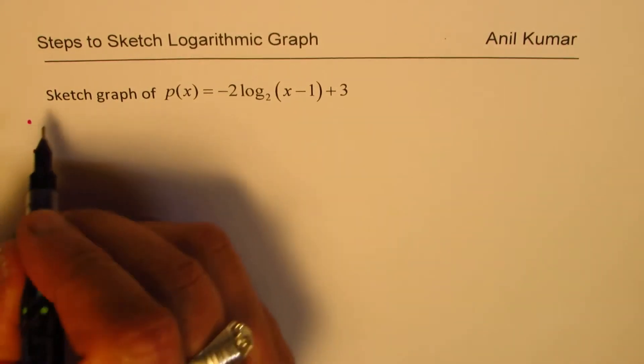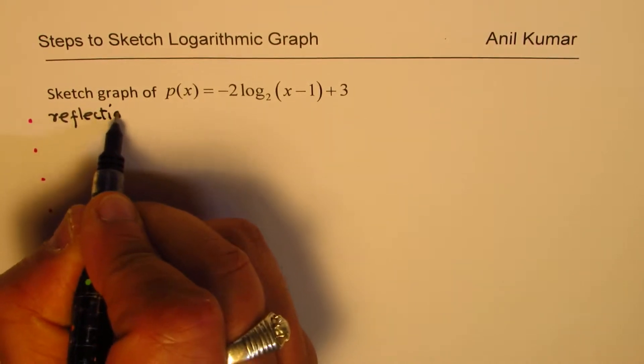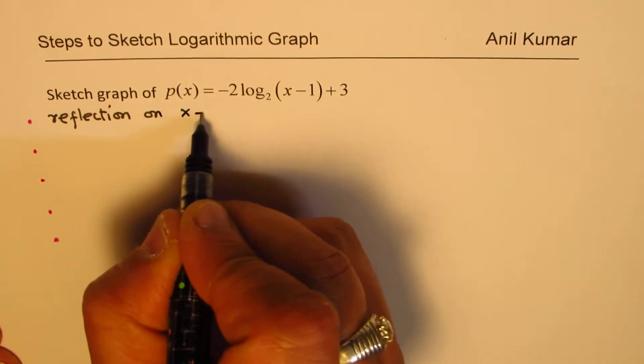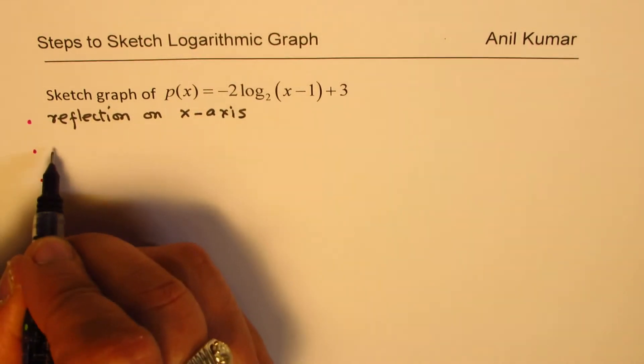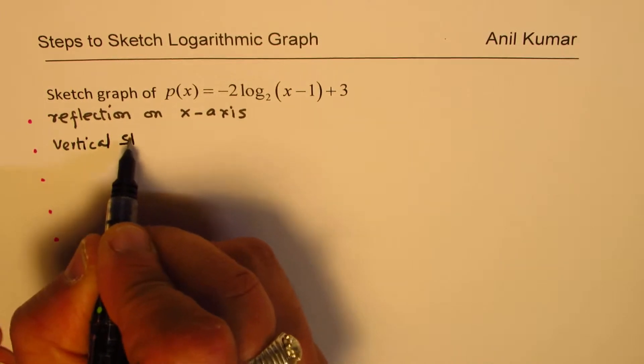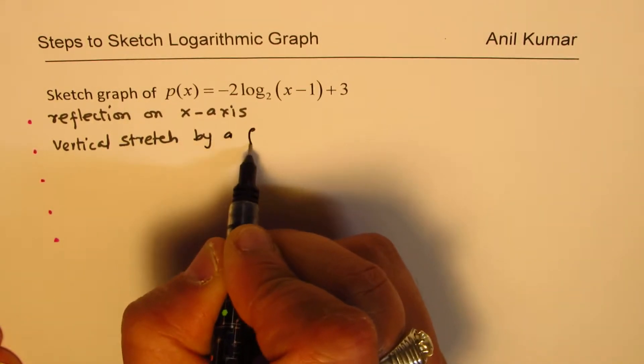That negative is what? It is reflection on x-axis, vertical reflection on x-axis correct. This is first part. How about this 2? 2 is vertical stretch, so it is vertical stretch by a factor of 2.